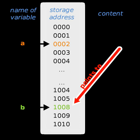Breaking it down: array+i is the memory location of the i-th element of array, starting at i equals 0; *(array+i) takes that memory address and dereferences it to access the value.